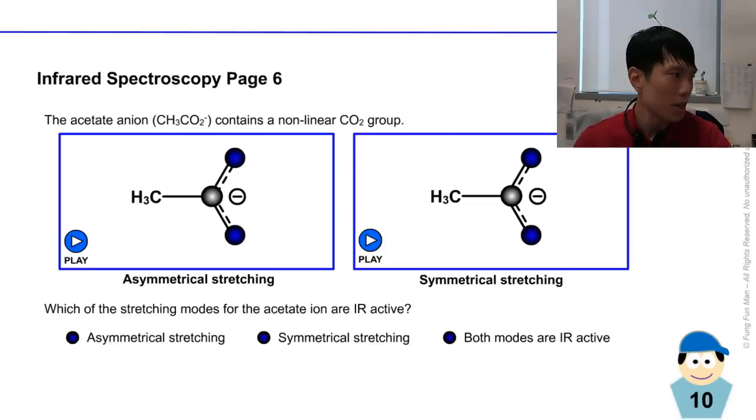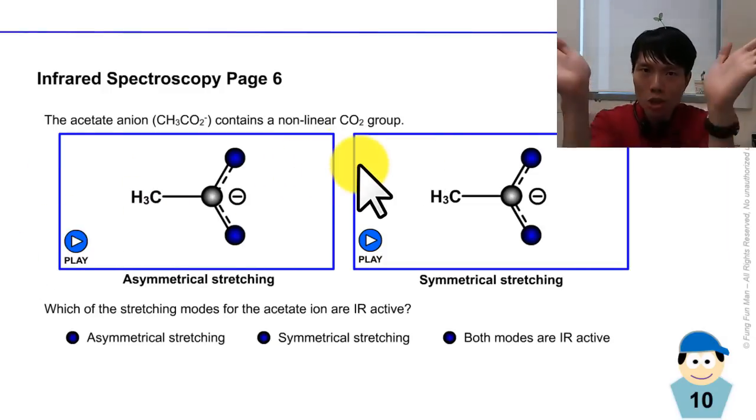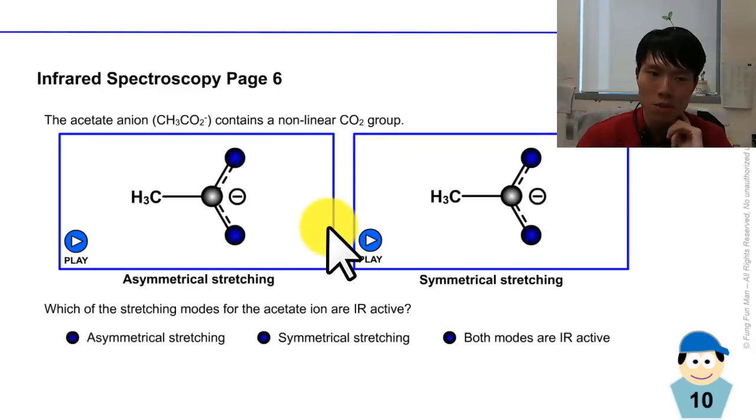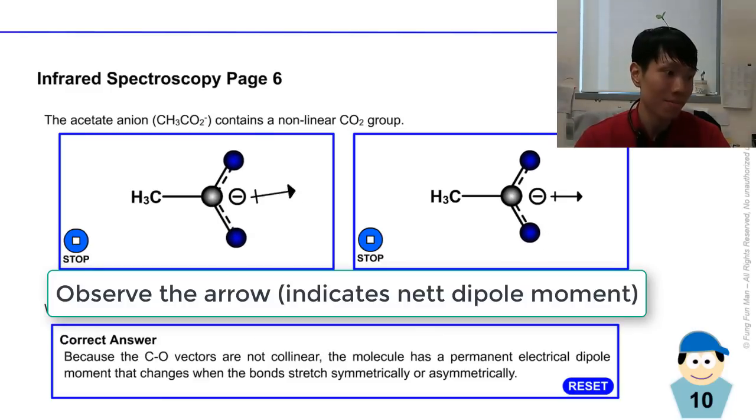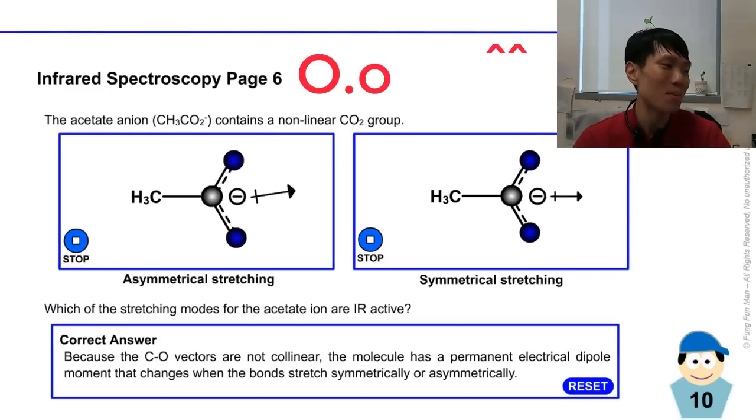Now for this molecule here called the acetate ion, this contains a non-linear CO2 group - not linear but branched towards the end. So again we have two kinds of stretching: asymmetrical stretching and symmetrical stretching. Now which of these for the acetate ion are infrared active? Is it both? Let's give it a try. It is. Why? Because you see, in both cases there's always a change in the dipole moment.